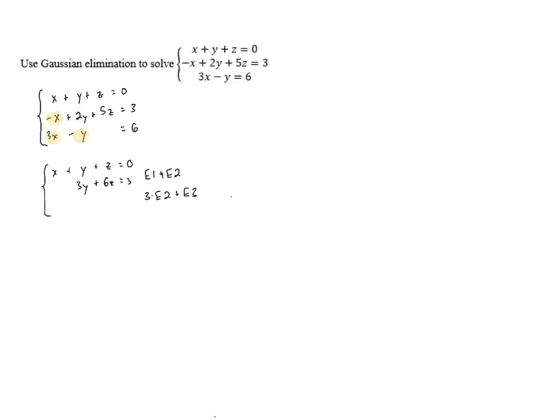3 times 2y is 6y, and 6y minus y is 5y. Then 3 times 5z is 15z, and 15z plus nothing is 15z. And when we look at the constants, 3 times 3 is 9 plus 6 is 15. Very good.